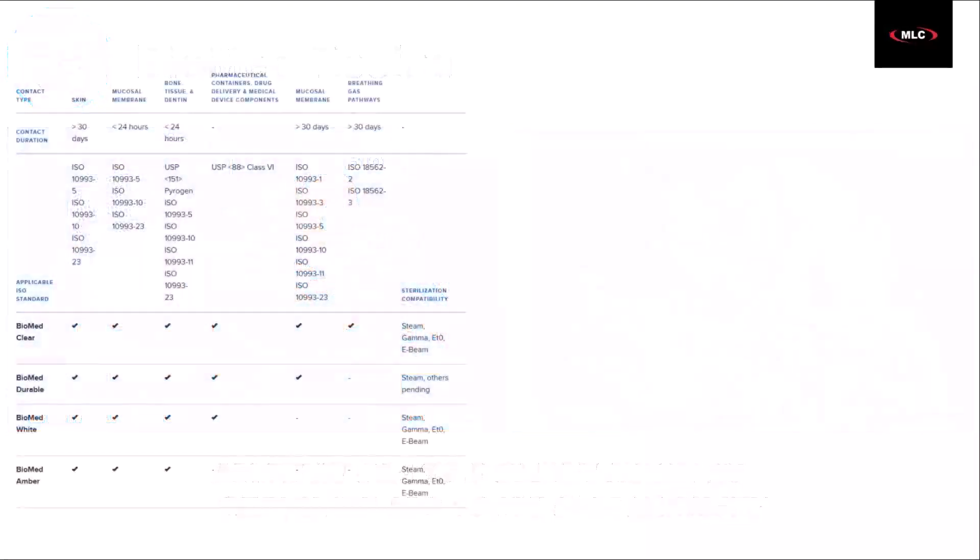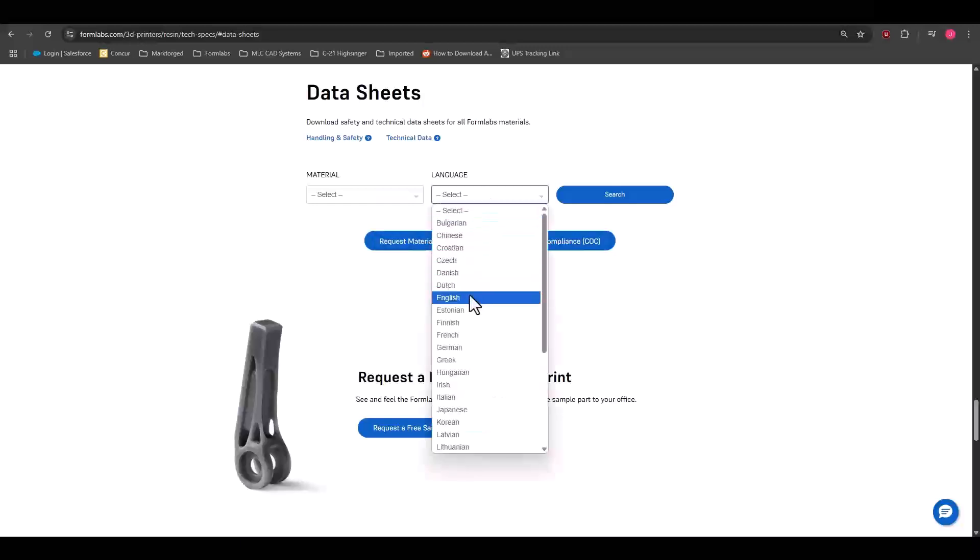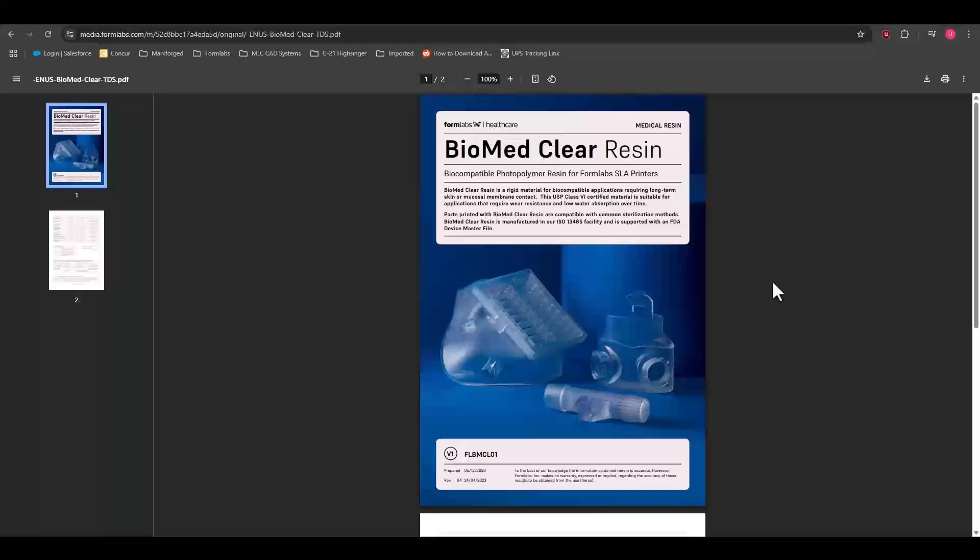This table here shows their contact type, duration, endpoints, and sterilization method, mirroring the ISO 10993 table we saw earlier. Use this table and the material properties listed in the corresponding technical data sheets to determine what material you should use for your medical application.